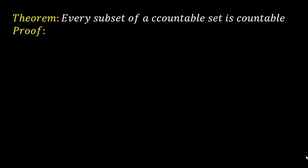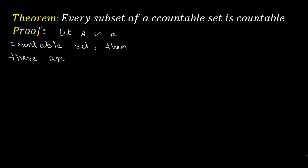Every subset of a countable set is countable. Let A be a countable set. If A is a countable set, then there are two possibilities.